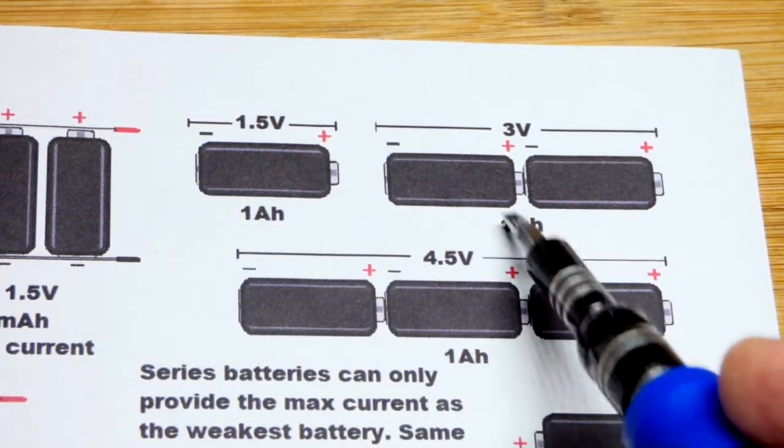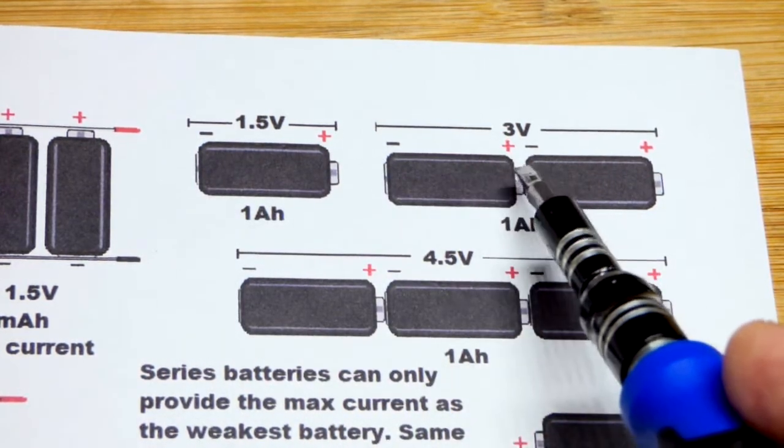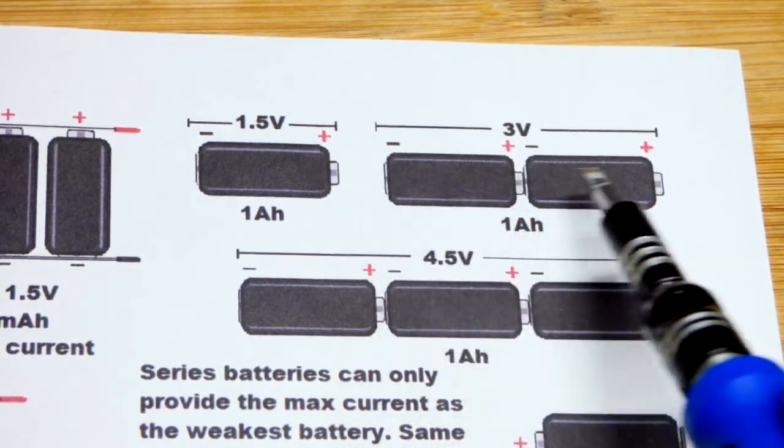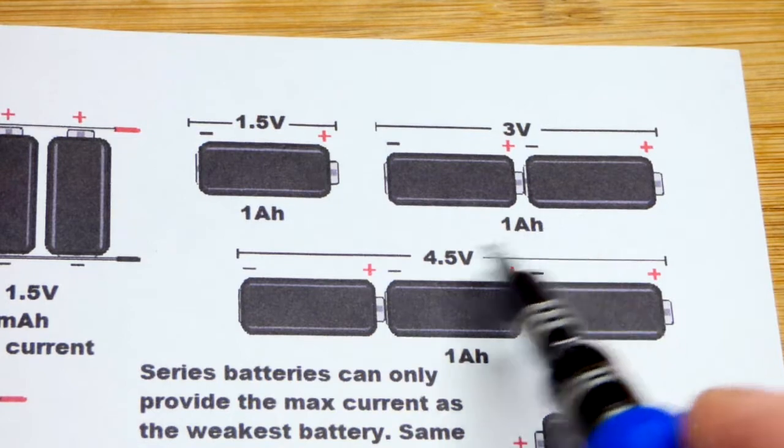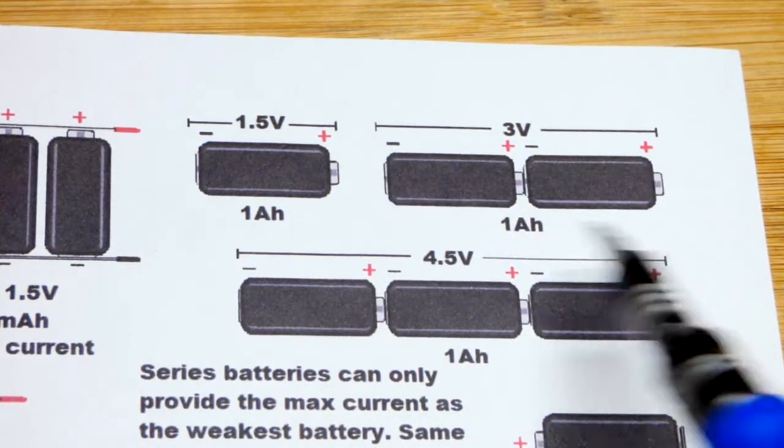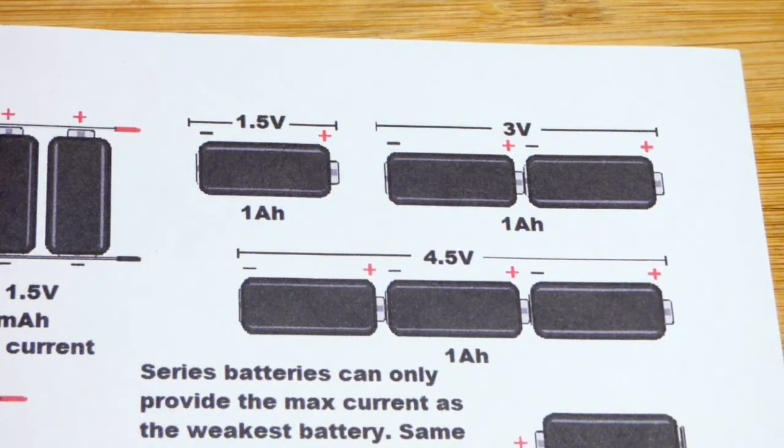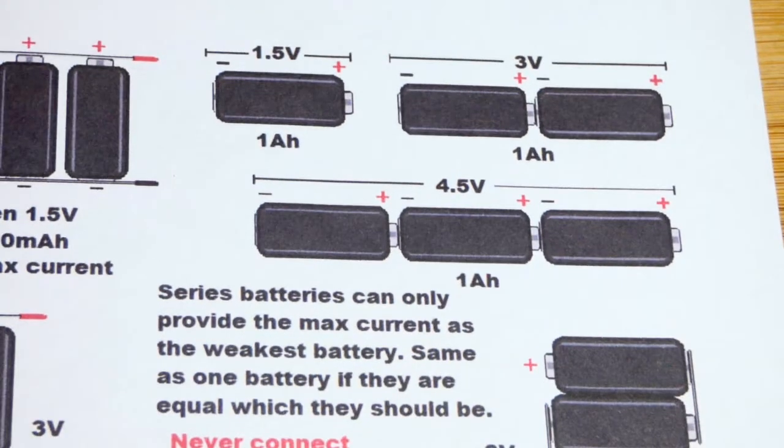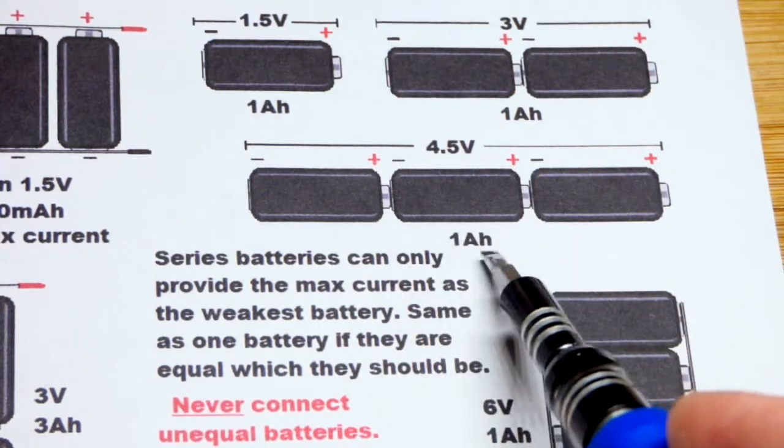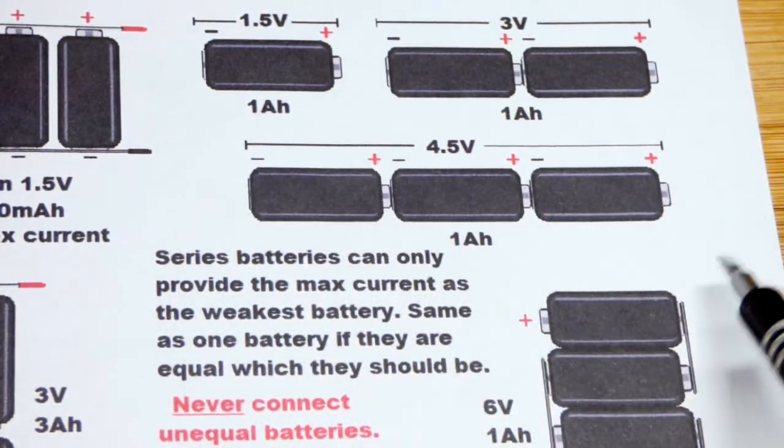If that battery can pass one amp of current, the two of them in series have a higher voltage, but each one can only pass one amp of current over an hour. The current has to flow through the two of them and they're passing current just like they're by themselves. With three of them we got 4.5 volts, and again the three will be able to pass an amp of current for an hour but at a higher voltage.